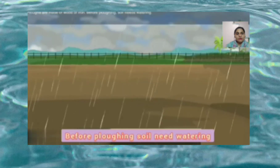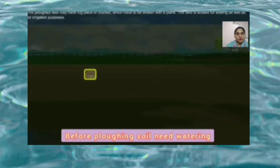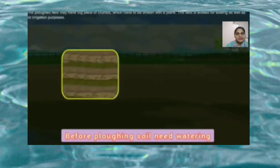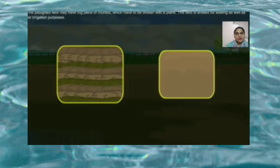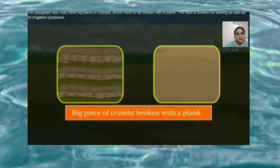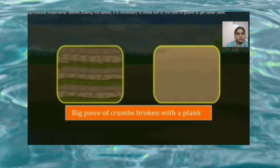Before plowing, the soil needs watering. Plows are made of wood and iron. The plowed field may have big pieces of soil clumps which have to be broken. The field is leveled for sowing as well as for irrigation. Before sowing the seed, it is necessary to break the soil into fine grains to get a better yield.